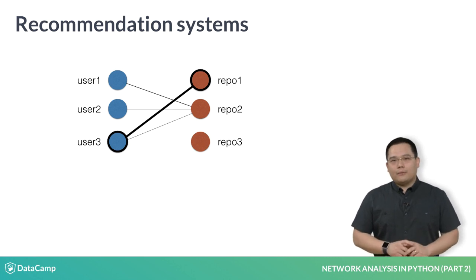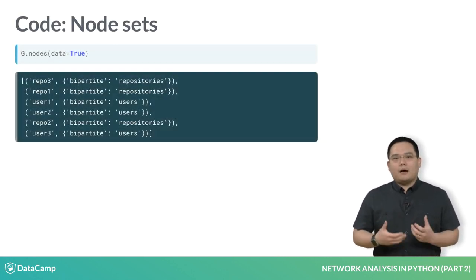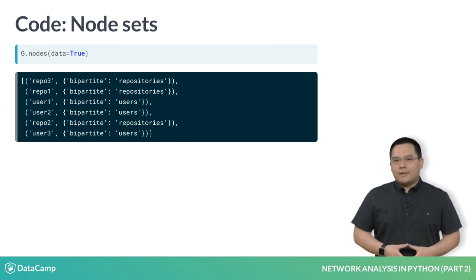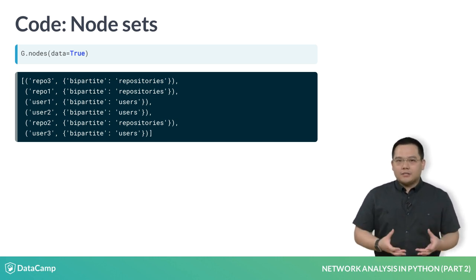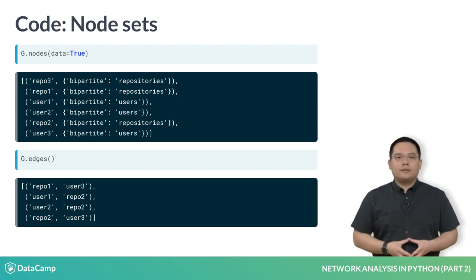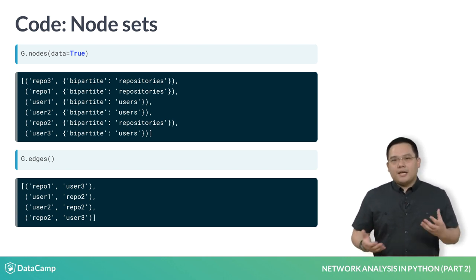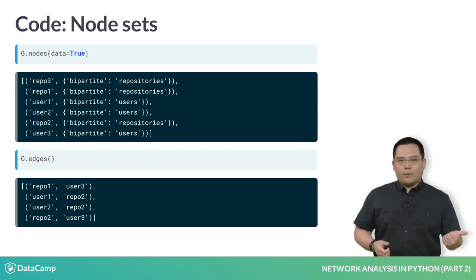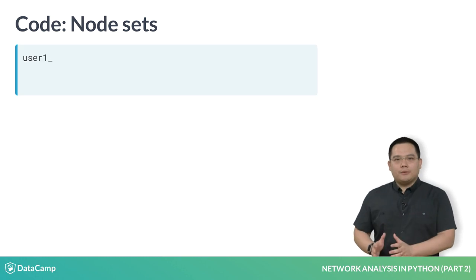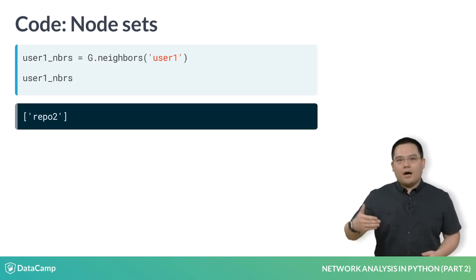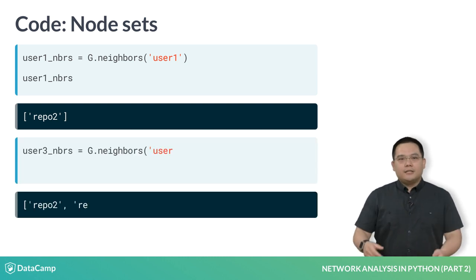One thing that may come in handy for the following exercises is the idea of using set operations in your code. Let's say we have the graph from before represented in code. You'll see the node list contains all six nodes belonging to both the repositories and the user's partitions, and the edge list containing the four edges between them. Suppose we wanted to see which neighbors are shared between two nodes, user 1 and user 3.